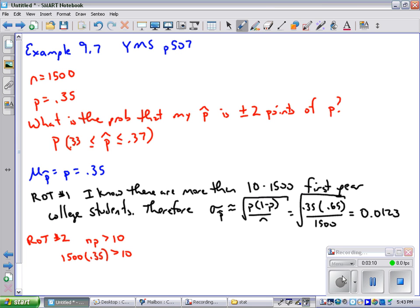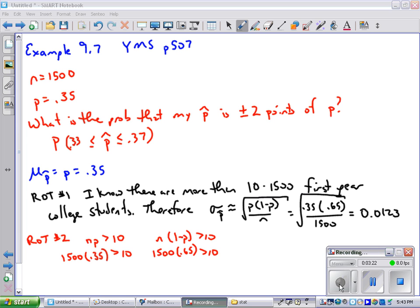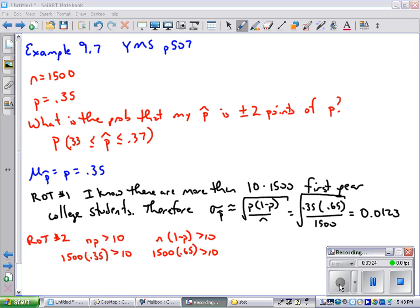How about n times (1 minus P), is that greater than 10? Yes, that's greater than 10. Both of those numbers are greater than 10. Here we have 525 is greater than 10 and of course the rest, 975, is greater than 10. So I can use the normal approximation.